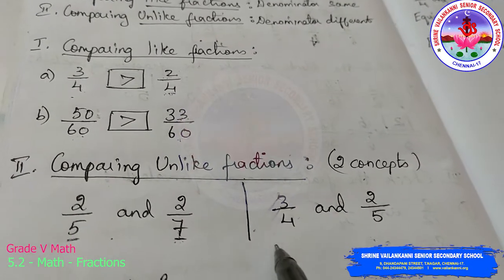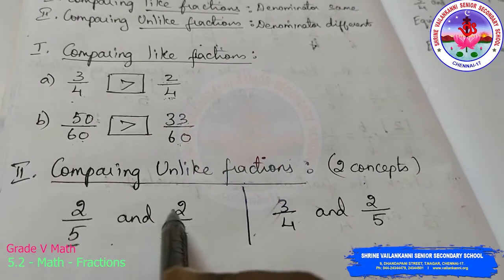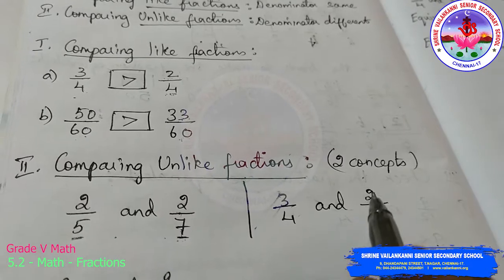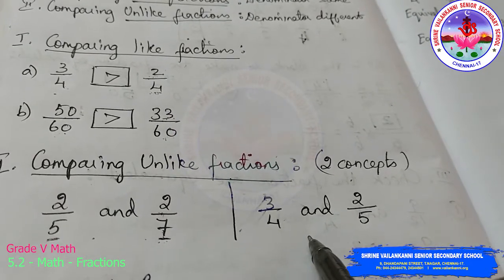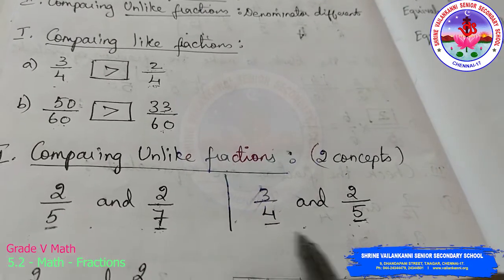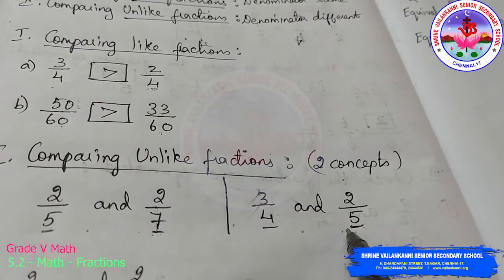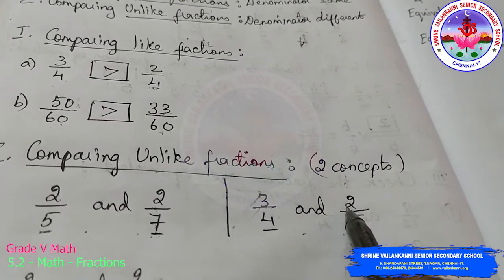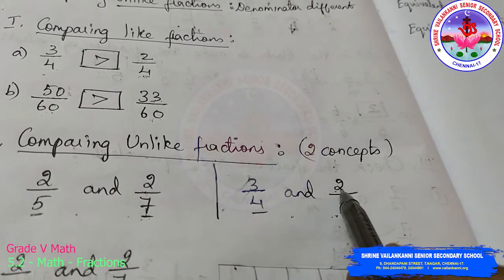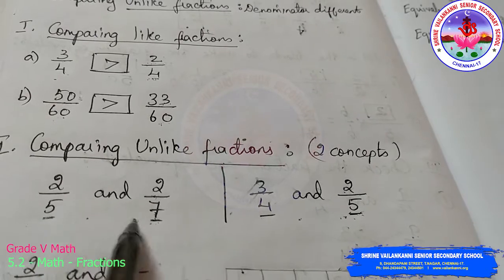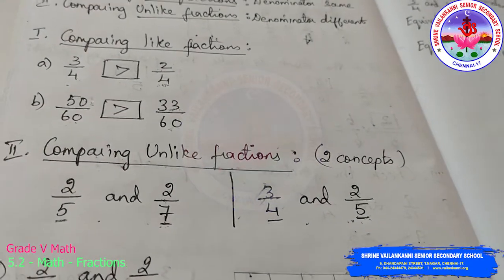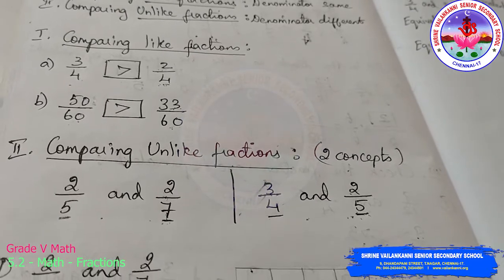Now since it is an unlike fraction, compare the numerators — both values are the same. Here is another example of unlike fractions: 3/4 and 2/5. The denominators 4 and 5 are different, so it is also an unlike fraction. Here the numerators 3 and 2 are different. So in one case denominators are different but numerators are the same, and in the other case both numerators and denominators are different. Whenever your denominators are different it is absolutely an unlike fraction.